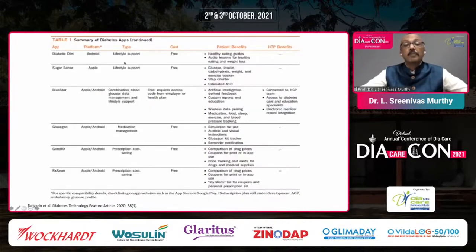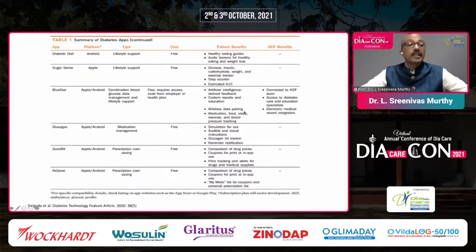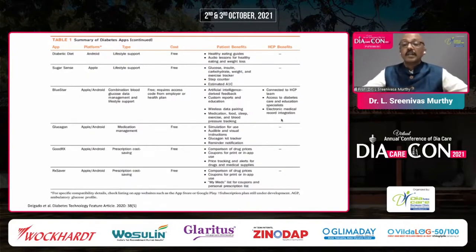The diabetic diet app includes healthy eating guides. Blue Star, which is FDA approved, uses artificial intelligence for feedback and customizes education reports. It supports wireless data pairing covering medication, food habits, sleep, exercise, and blood pressure tracking. It can be connected to clinic teams and assistants, with access to diabetes care and education specialists, and electronic medical record integration. Blue Star is one of the most commonly used apps and is very useful in routine practice.